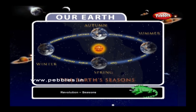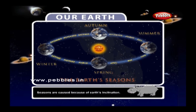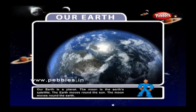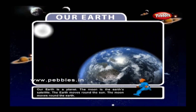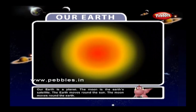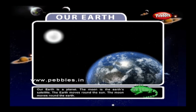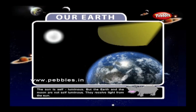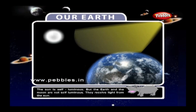Seasons are caused because of Earth's inclination. Our Earth is a planet and the Moon is the Earth's satellite. The Earth moves round the Sun and the Moon moves round the Earth. The Sun is self-luminous, but the Earth and the Moon are not self-luminous — they receive light from the Sun.